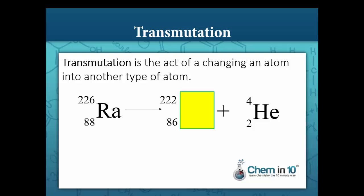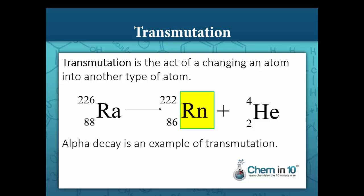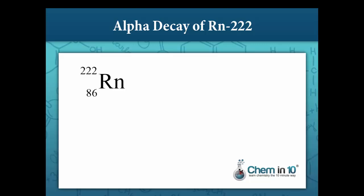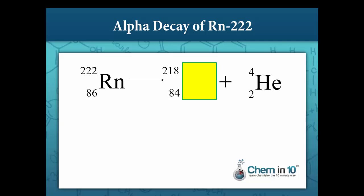Transmutation is the act of changing an atom into another type of atom. The alpha decay of radium into radon is an example of transmutation. Now that we've formed radon-222 from the alpha decay of radium-226, what does radon-222 decay into? The sum of the mass numbers on the product side must equal the reactant side, so 4 plus our unknown mass number equals 222, giving us 218. The atomic numbers: our unknown plus 2 must equal 86, so the atomic number is 84. Our unknown element is polonium-218.